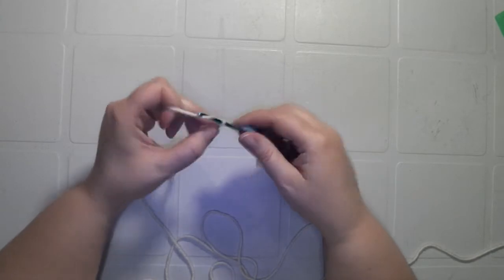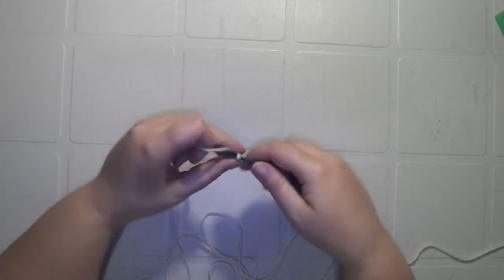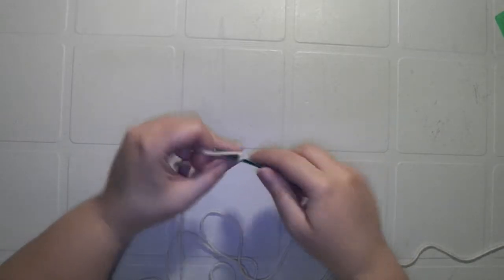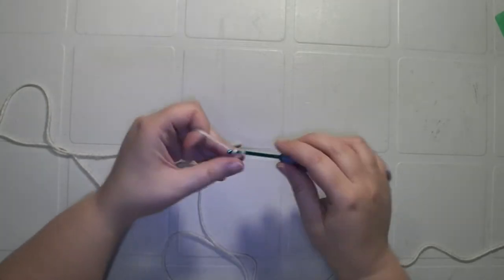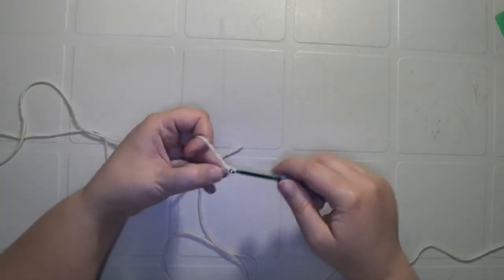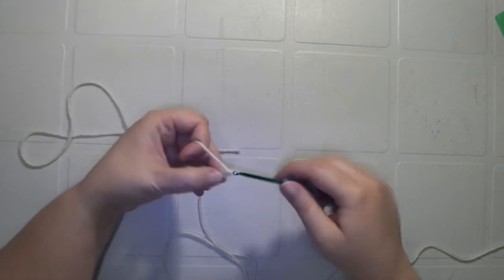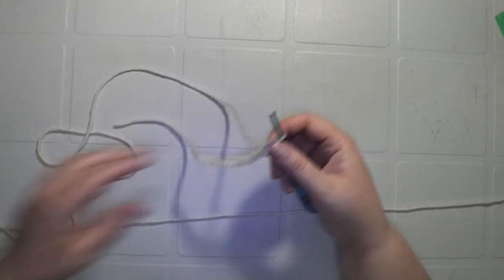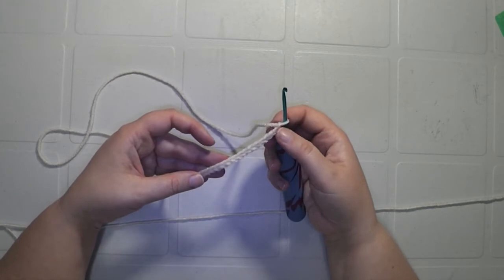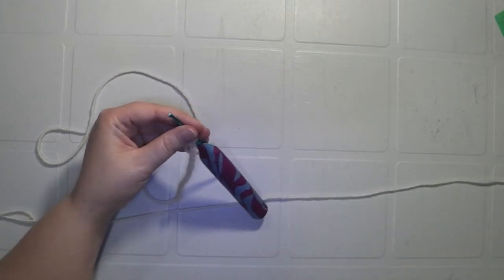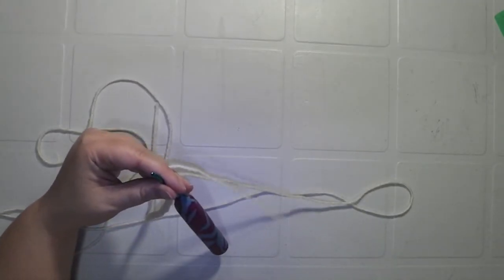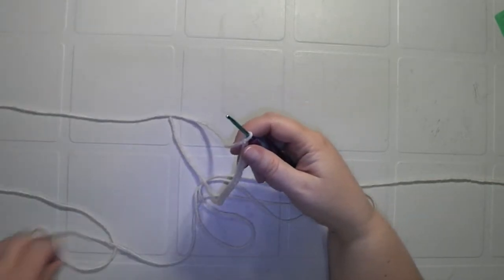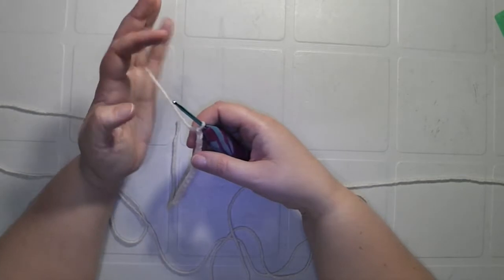Okay, so what we're going to do is we're going to start off with a chain of 16. One, two, three, four, five, six, seven, eight, nine, ten, eleven, twelve, thirteen, fourteen, fifteen, and sixteen. So you'll be able to see all those chains. Every little V is one chain.